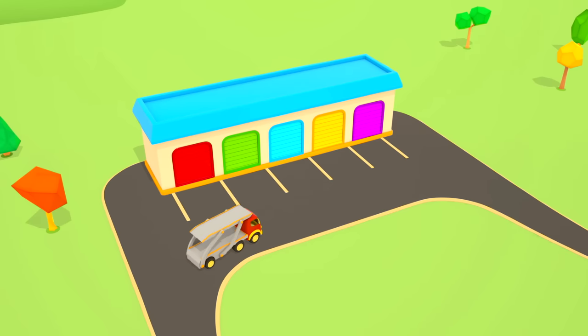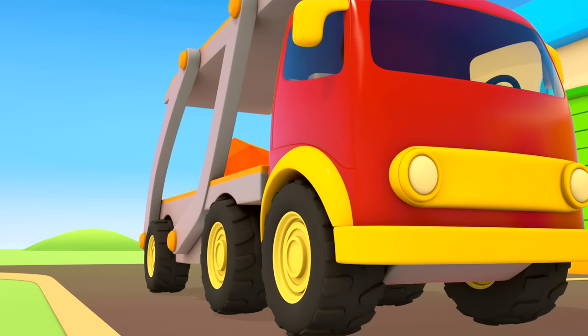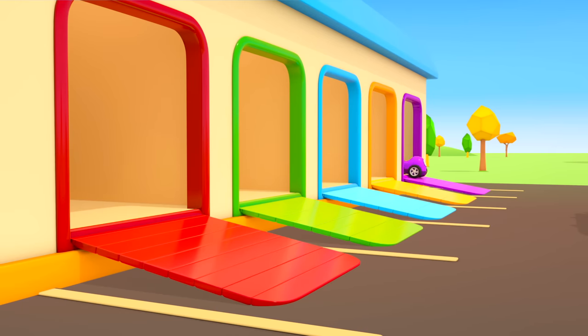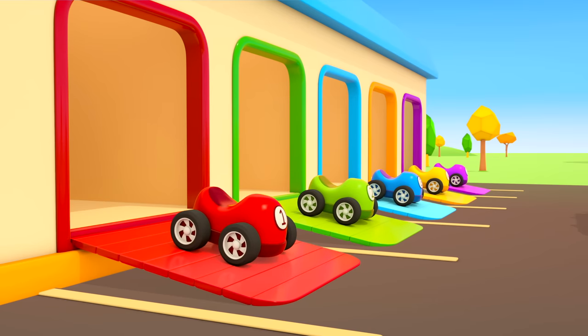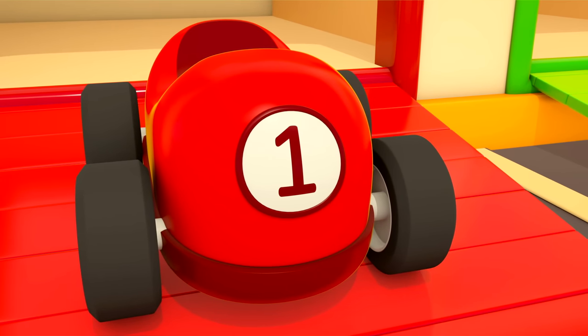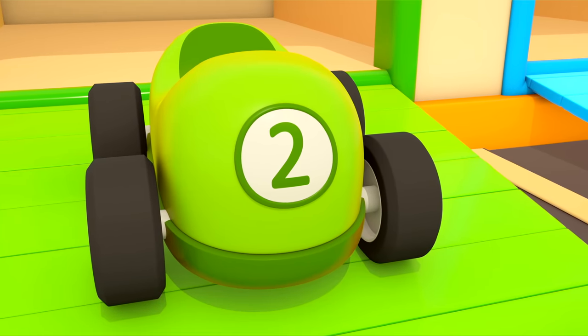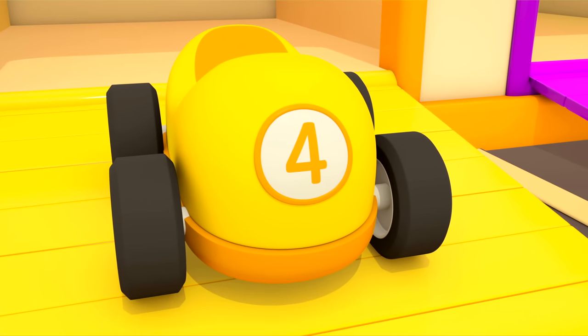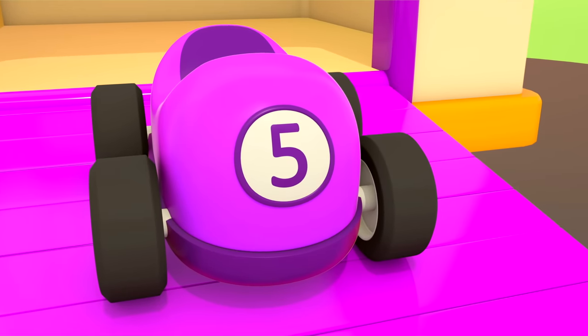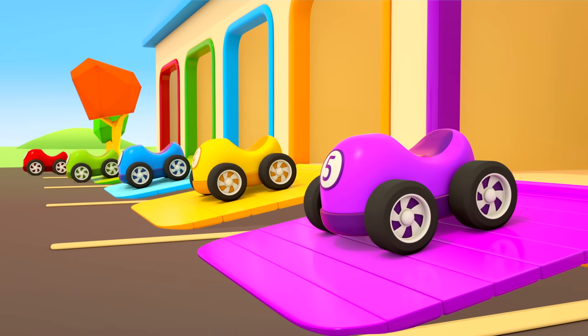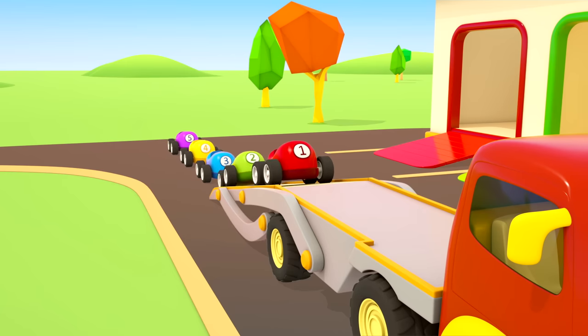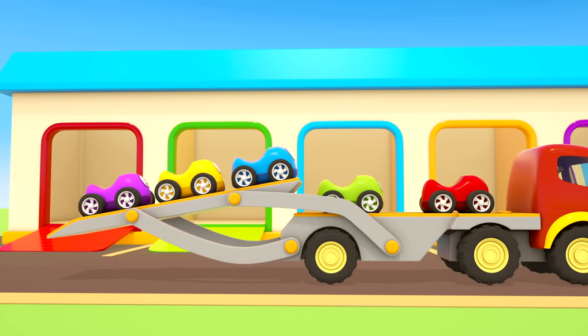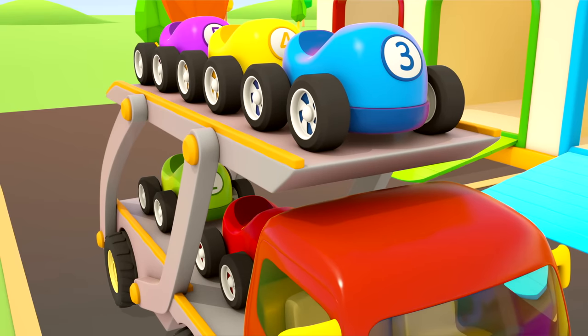A car transporter drove up to the garage. I wonder what he will do. These are colorful race cars. Each of them has its own number. One, two, three, four, five. The cars drive onto the transporter one by one. The platform rises. Now they can go.